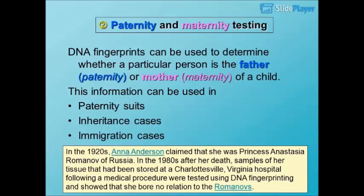Paternity and Maternity Testing: DNA fingerprints can be used to determine whether a particular person is the father (paternity) or mother (maternity) of a child. This information can be used in paternity suits, inheritance cases, and immigration cases. For example, in the 1920s Anna Anderson claimed she was Princess Anastasia Romanov of Russia. In the 1980s after her death, tissue samples stored at a Charlottesville, Virginia hospital were tested using DNA fingerprinting and showed she bore no relation to the Romanovs.